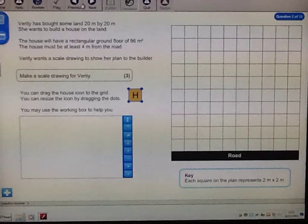Verity has bought some land, 20m by 20m. She wants to build a house on the land.